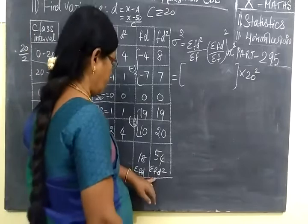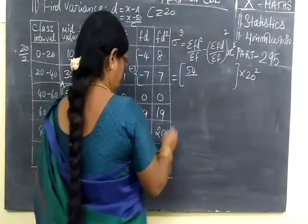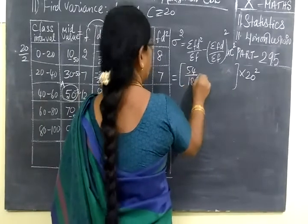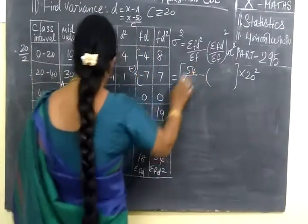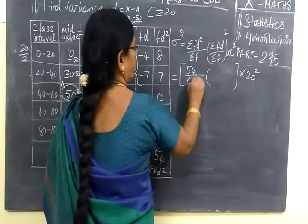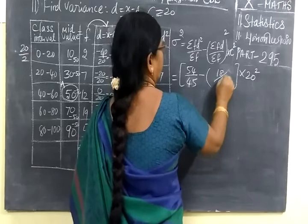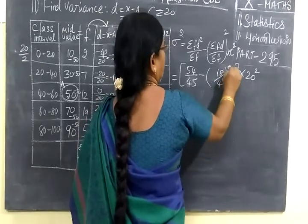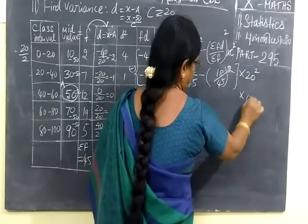Now we will substitute. fd square 54 by here 80. Minus. So not 80. Here 45. So 45. Minus 18 by 45 whole square into C square. So in the next term it is 400.